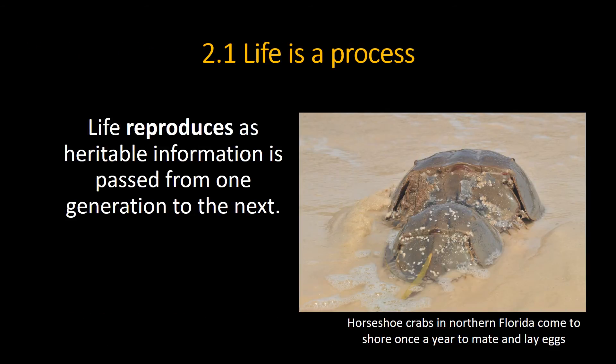For life to persist, there has to be reproduction. Life reproduces, and during reproduction that DNA — the heritable information — is copied and put into the next generation. What that means is you represent an unbroken lineage going back to the very first life on this planet — 3.8 billion years of an unbroken lineage. Another way of looking at it: you're the result of 3.8 billion years of evolutionary success.